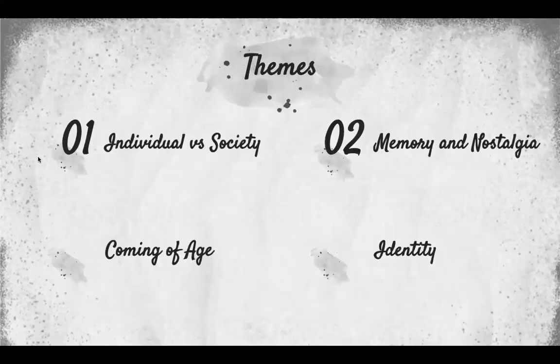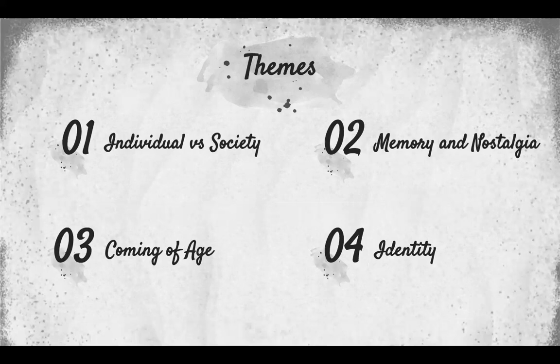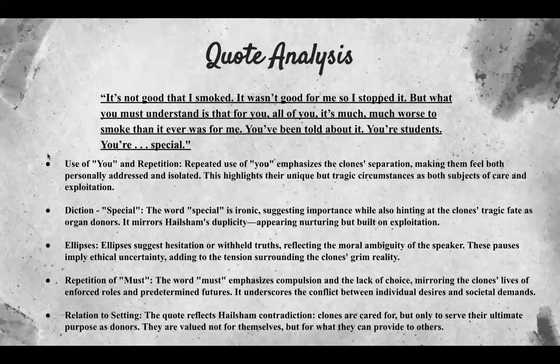So the four main themes of Never Let Me Go are: individual versus society, which we've discussed extensively; memory and nostalgia, which we'll explore through the quotes; coming of age; and identity.